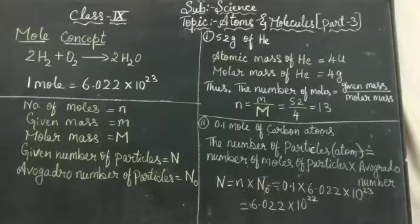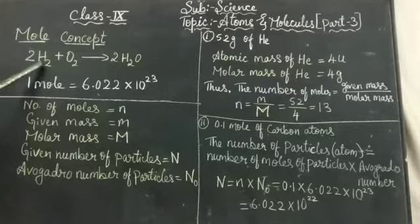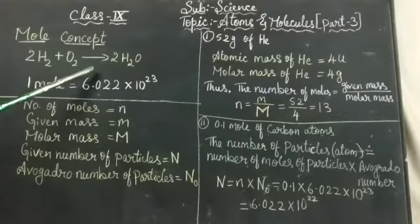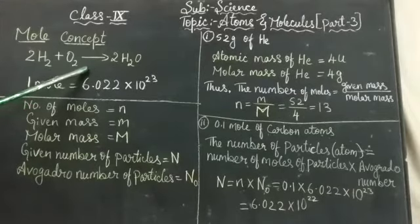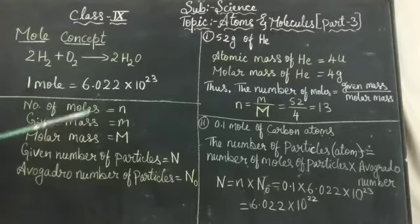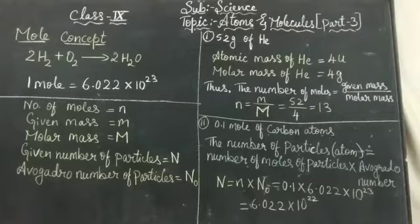As you can see the equation that is 2H2 plus O2 give rise to 2H2O. This I can give in two ways. What are those two ways? Two molecules of hydrogen combine with one molecule of oxygen to form two molecules of water. Just we are taking like molecules.